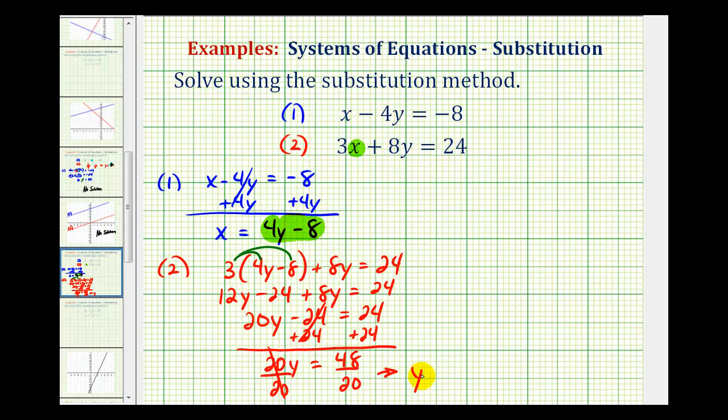So we have y equals, this would be forty-eight-twentieths, but this does simplify. These both have a common factor of four. Forty-eight is four times twelve, and twenty is four times five. These fours simplify to one, and we're left with y equals twelve-fifths.